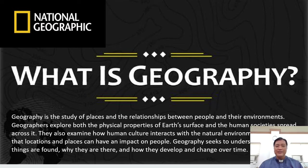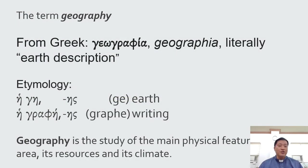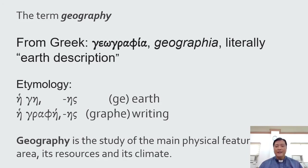When we study geography, it's not just confined to something Biblical — it's a broader set of knowledge. What is the etymology of the word geography? It's from the Greek, Geographia. Literally it means 'Earth's description.' From the Greek, Ge or Geis meaning Earth, and Graphe meaning writing. So, writing about the Earth — a description of the Earth. Geography is the study of the main physical features of an area, its resources, and its climate.